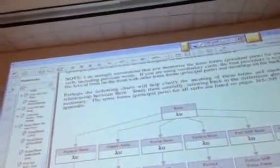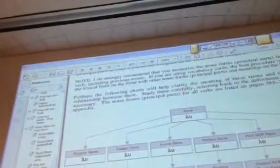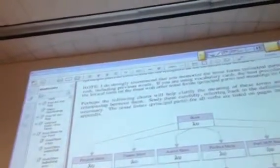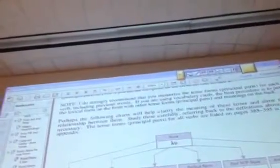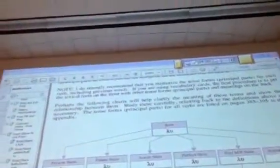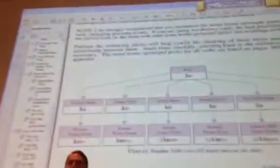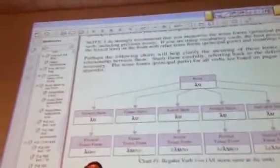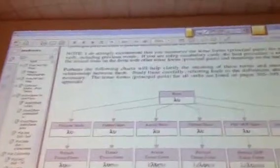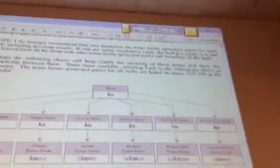In the future, we have the stem, then we have the tense formative sigma, and then we add the personal ending. So, we have a principal part in each tense as well that represents the stem with all of the other elements that form that verb in that tense added to it.